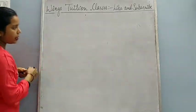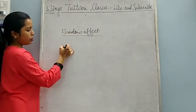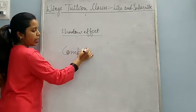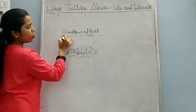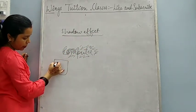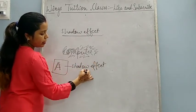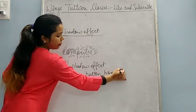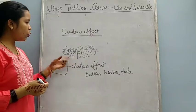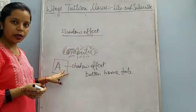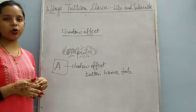Now the next topic is applying shadow effect. What is this shadow effect? Whatever you are writing — suppose I am writing a word — if you want to apply a shadow to this word, you can click on the shadow effect button. A capital A is written on that button, and this button also you will get on the Home tab. Simply select the text where you want to apply the shadow, click on the shadow effect button, and you will see your line will have a shadow effect appearance. This is known as shadow effect in MS Word.